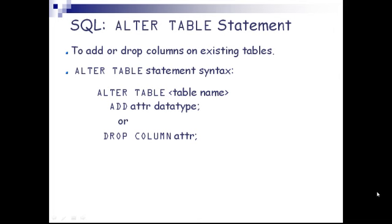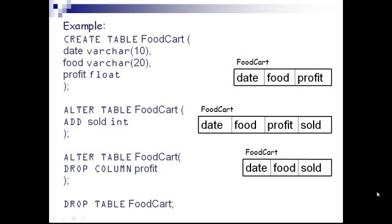Alter table statement is used to add or drop columns on existing tables. The syntax is: ALTER TABLE table_name ADD attribute data_type or DROP COLUMN attribute. For example, CREATE TABLE food_cart with three data types: date as CHAR(10), food as CHAR(20), and profit as FLOAT. This creates a table with columns date, food, and profit.